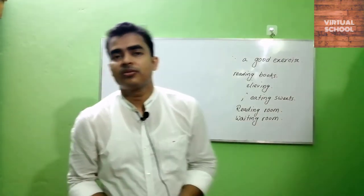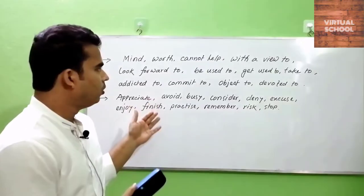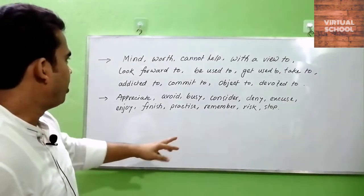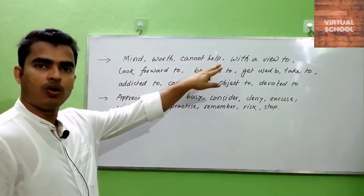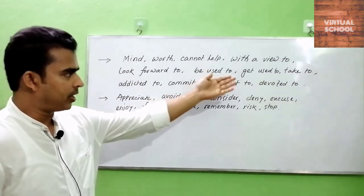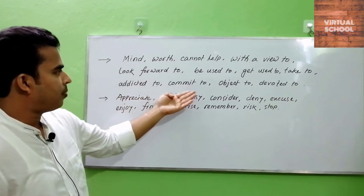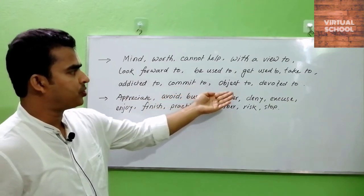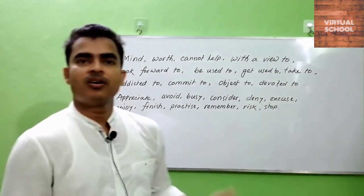Besides all this, there are some specific verbs that take a gerund after them. These verbs include: mind, ought, cannot help, with a view to, look forward to, be used to, get used to, take to, addicted to, commit to, object to, devoted to. All these verbs take a gerund after them.